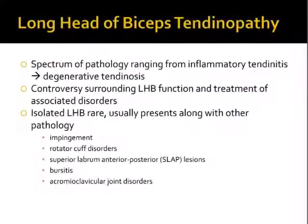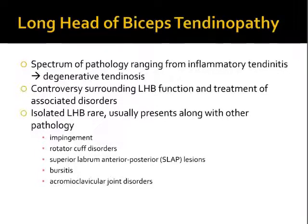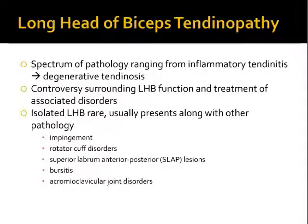Moving on to long head biceps tendinopathy. This is a spectrum of pathology that ranges from inflammatory tendinitis through to degenerative tendinosis. There's controversy surrounding the function and treatment of disorders of the long head biceps, and isolated long head biceps tendinopathy is exceptionally rare. It usually presents along with other shoulder problems — other impingement, rotator cuff disorders, SLAP lesions, bursitis, or AC joint disorders.